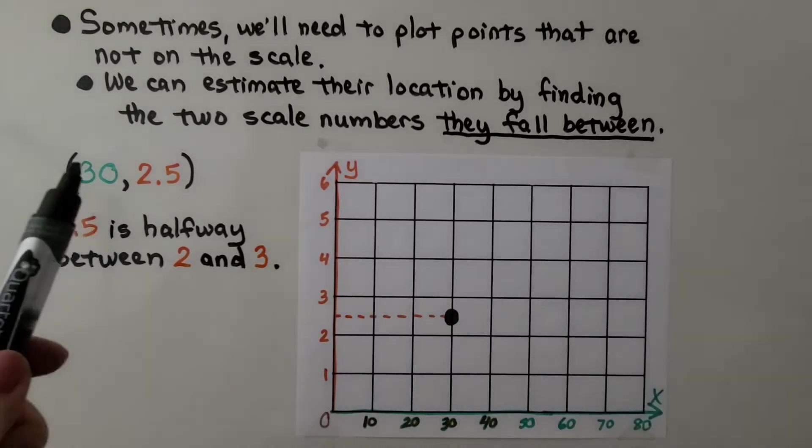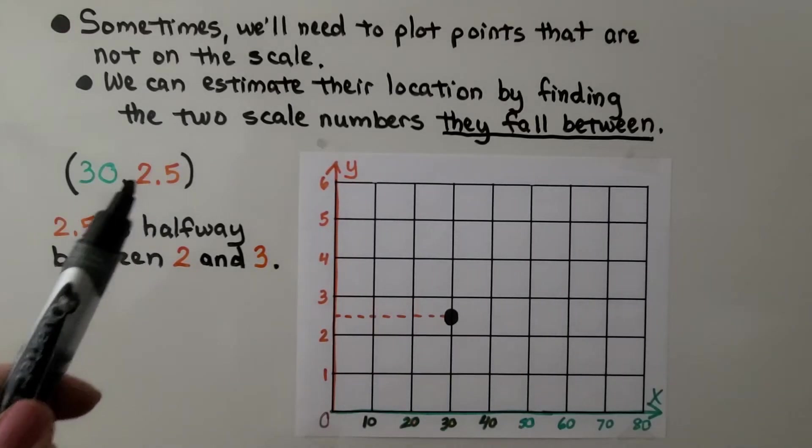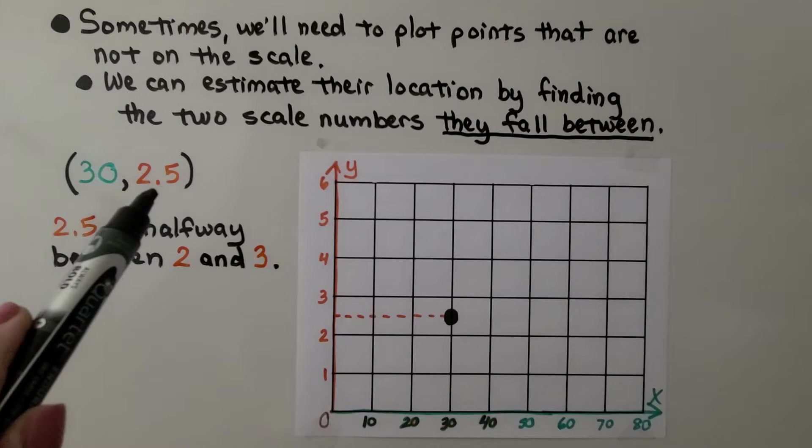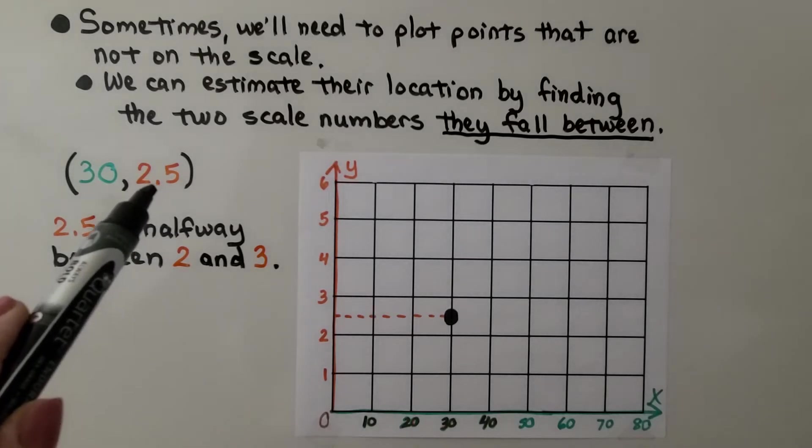So we use the x coordinate and the y coordinate to help us plot a point on the coordinate graph, the coordinate grid. And we can estimate their location by finding two scale numbers they fall between. So here our y value is 2 and 5 tenths, 2 and a half.